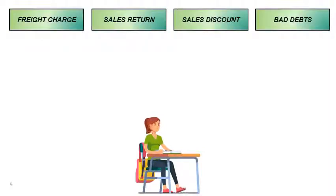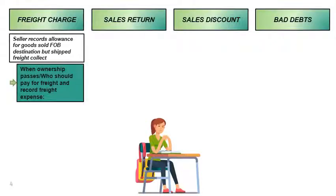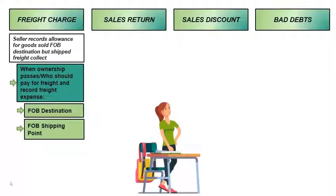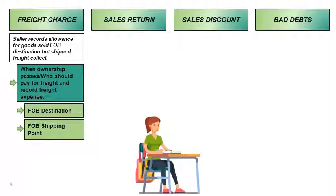An allowance for freight charge is recorded by the seller when goods are sold FOB destination but shipped freight collect. The owner of the goods shipped should be the one who pays for the freight. In FOB destination, the seller retains ownership of the goods in transit until arrival at the port of destination, so the seller should pay for the freight. In FOB shipping point, the buyer becomes the owner of the goods from the point of shipment, and so the buyer should pay for the freight.